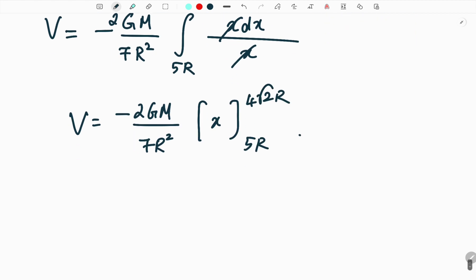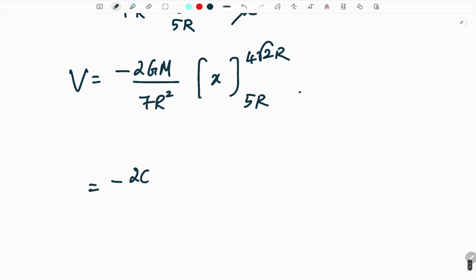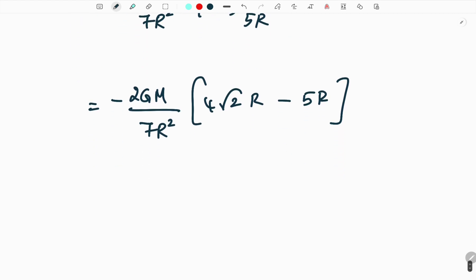So 2GM by 7r square if you integrate dx you are going to get x over the limits 5r and 4 root 2 times r. So if you apply minus 2 capital GM by 7r square into 4 root 2 r minus 5r. One r will get cancelled therefore your answer is minus 2GM by 7r into 4 root 2 minus 5.